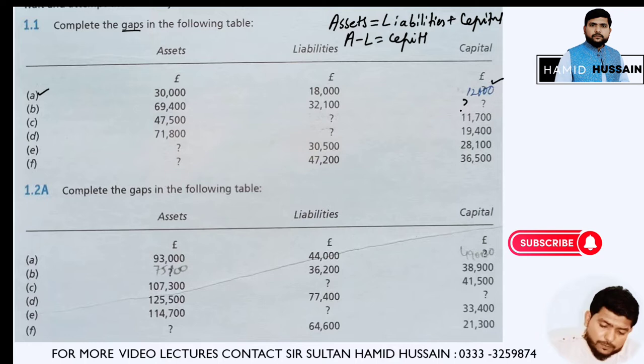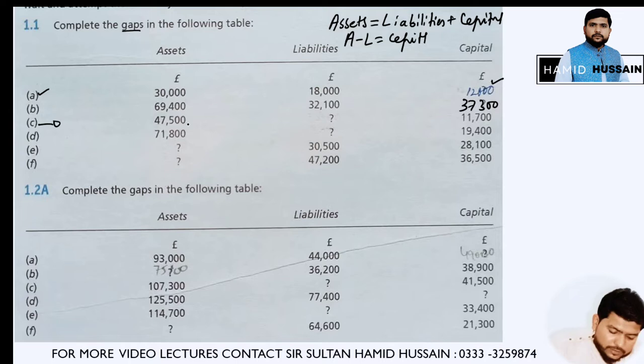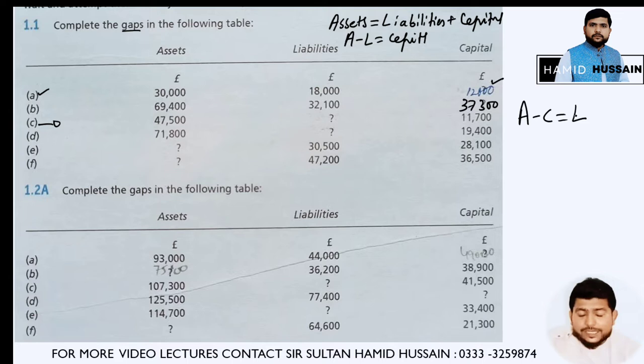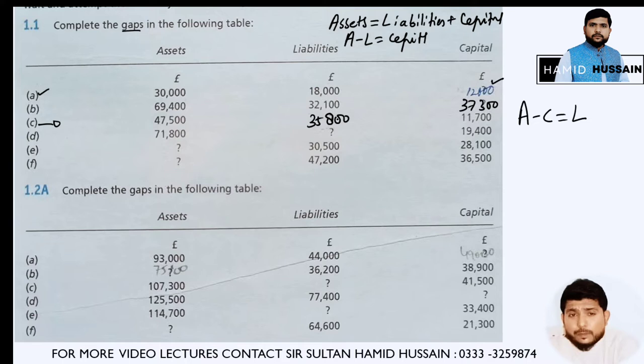In part C, assets are given as 47,500 and capital is given as 11,700. We need to subtract capital from assets to find out liabilities. So 47,500 minus 11,700 gives us 35,800.